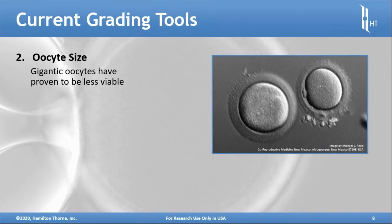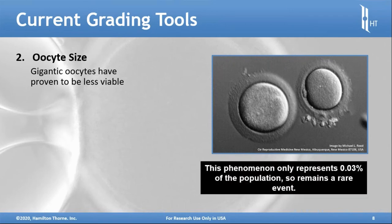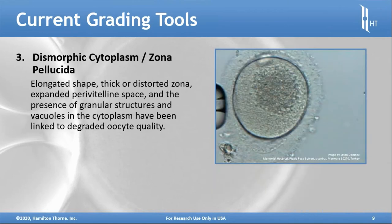Oocyte size is certainly telling, and giant oocytes may occur and are known to be less viable, but it's a small percentage of the overall population. Dysmorphic cytoplasm and a disrupted zona pellucida are telltale indicators of a less than viable oocyte. Anything outside the norm — elongated shape, thicker distorted zona, expanded perivitelline space — these are indicators of a degraded oocyte.